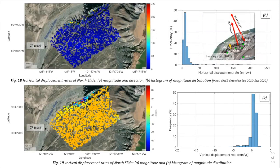InSAR also successfully detected the active part of North Slide that matches the extents of Solar Slump. Figure 18 shows the magnitude, direction, and distribution of horizontal movements of North Slide. In-situ measurements show that points are moving toward the Thompson River at rates of about 150 to 200 mm per year, with lower values of about 35 mm per year at the east. Figure 18a also shows that around the same locations, points are moving in the same range. Figure 19, on the other hand, presents the vertical displacement range, showing that the majority of points do not show considerable movements, except for those in Solar Slump.